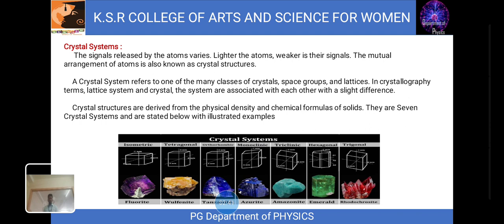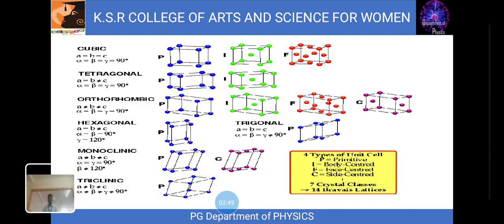There are seven crystal systems, stated below with illustrated examples. There are seven crystal structures, and the Bravais lattice refers to 14 different three-dimensional configurations into which atoms can be arranged in crystals. There are four types of unit cells: P refers to primitive, I refers to body center, F refers to face center, and C refers to side center. The letters A, B, C denote the dimensions of the unit cells, whereas alpha, beta, and gamma denote the corresponding angles within the unit cell.